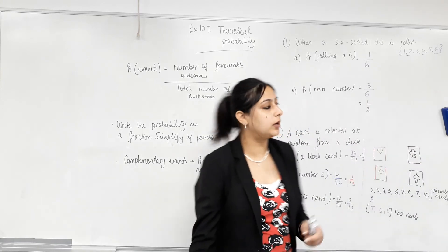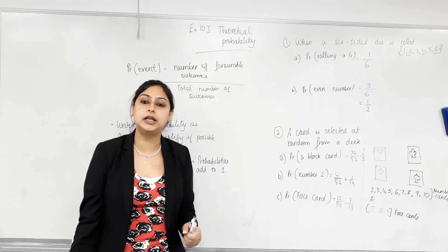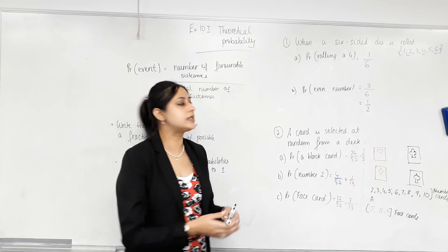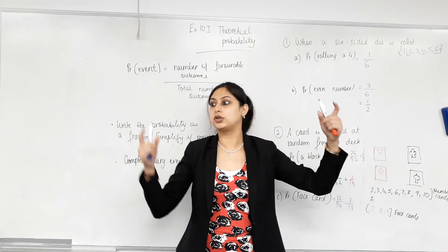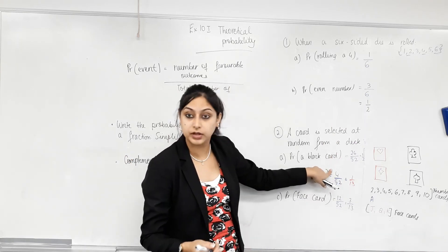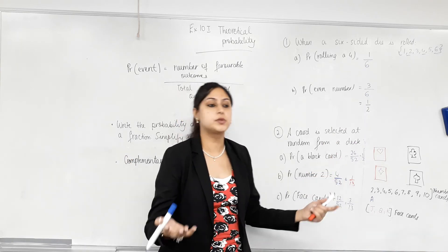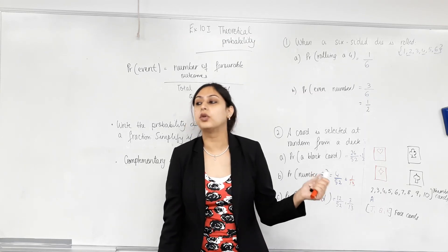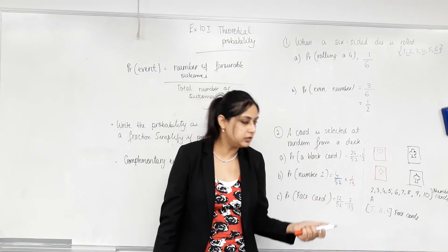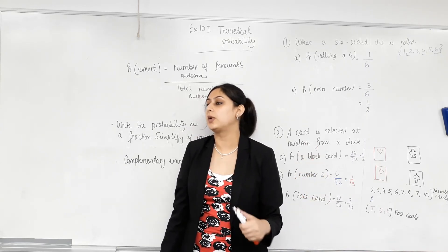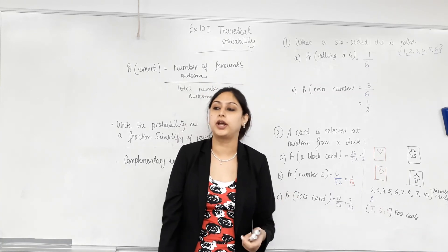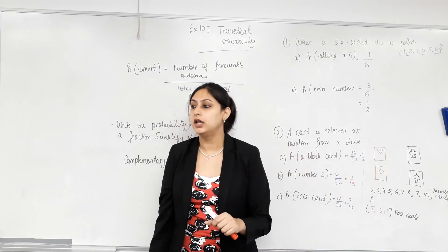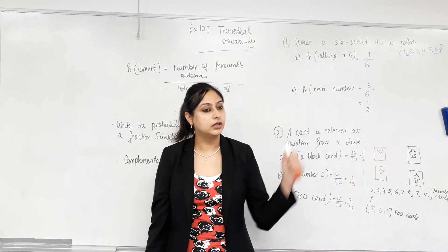Any questions on complementary events or on finding the theoretical probability? Why is it a theoretical probability? Because we're not actually taking the cards out — we're just basing it on the sample space: this is the total number of outcomes, and this is how many times that outcome is possible. That tells us how likely it is. But if we actually do an experiment, it might not be the same. Next lesson, we'll talk about experimental probability — we'll actually roll some dice and see what happens. In what cases will our experimental probability match our theoretical probability?